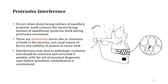Coming to protrusive interference. When the distal of the maxillary posterior teeth contacts the mesial inclines of mandibular posterior teeth, it leads to pathologic occlusion. These are destructive forces due to closeness of teeth to muscles, non-axial nature of forces, and inability of the patient to incise. When these forces contact tightly, they create problems in the tooth structure and the PDL structure in protrusive movements. This can be corrected and assessed with the aid of a mounted diagnostic cast before prosthetic rehabilitation is started.